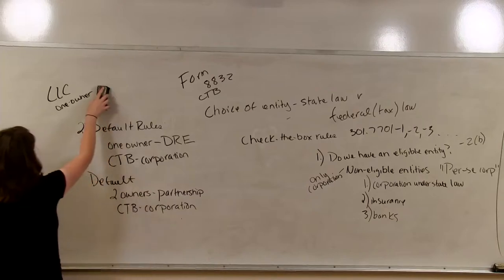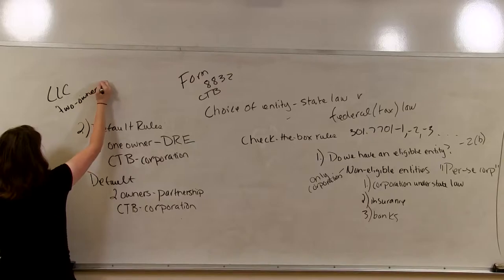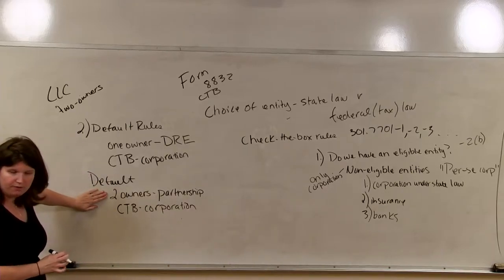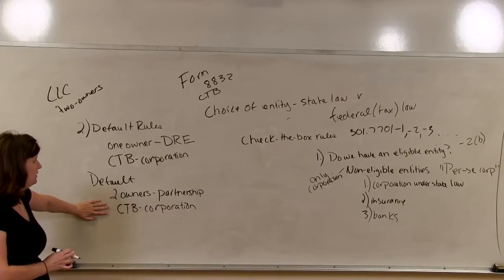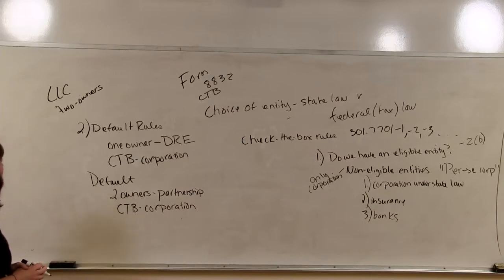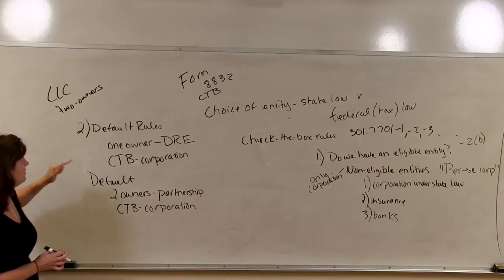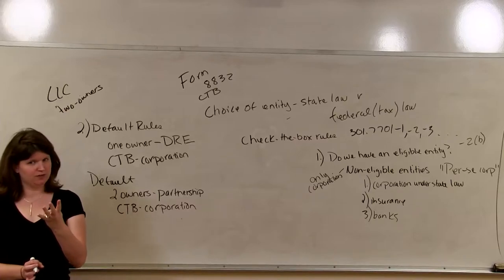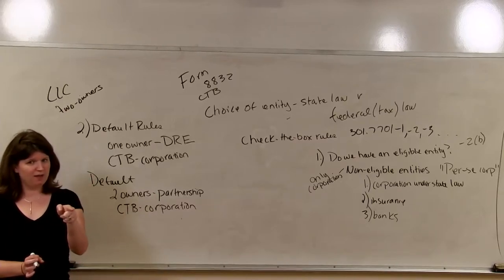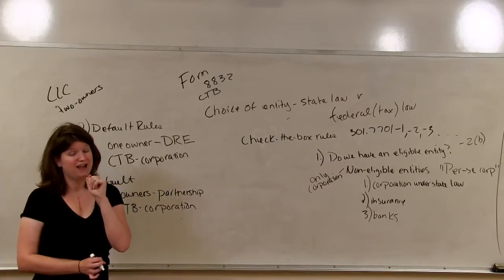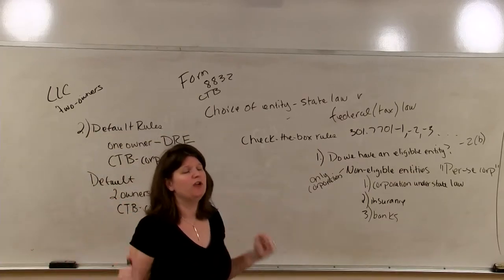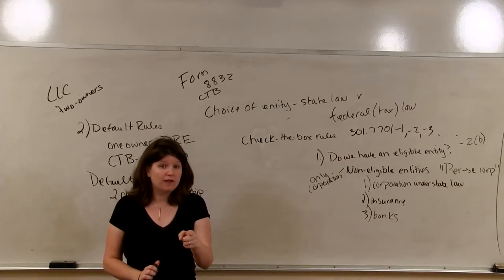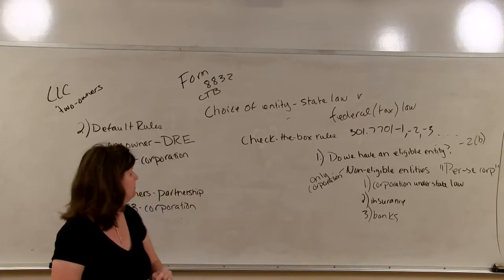What if this LLC has two owners? They default as a partnership for federal income tax purposes, but they can choose to be taxed as a corporation. So LLCs can be taxed as either a disregarded entity, a partnership, or a corporation — three out of the four options for federal income tax purposes. If a client comes into your office and says they're an LLC, you say: let me see your tax returns. Clients often have no idea how they're taxed, and if they've checked the box, you need to look at that election and make sure it's valid.